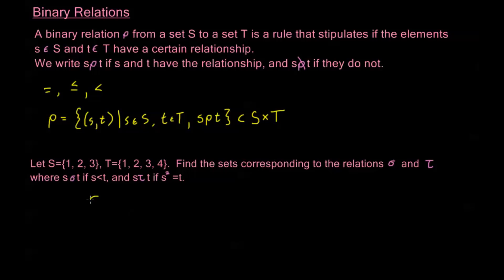Okay, so σ is going to be all the sets of ordered pairs (s,t), where s is less than t. So that's going to be {(1,2), (1,3), (1,4), (2,3), (2,4), (3,4)}.